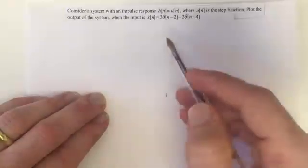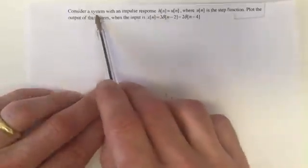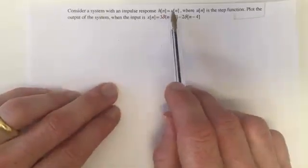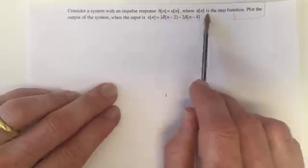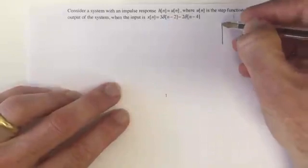So here we have a discrete time system with an impulse response h(n) which equals u(n), and u(n) is the step function.